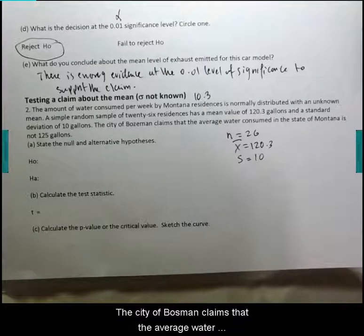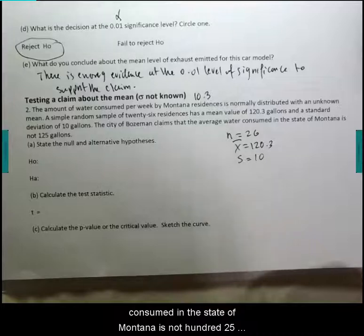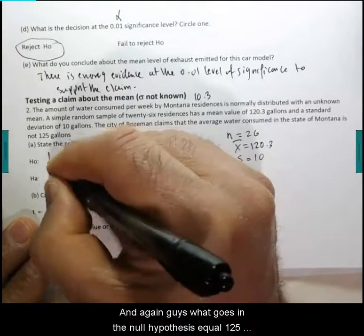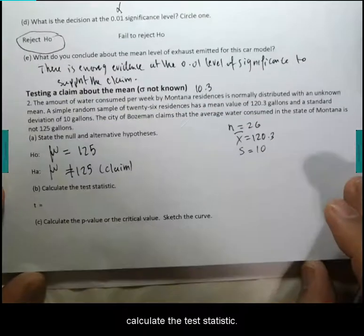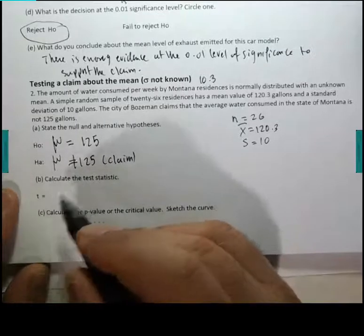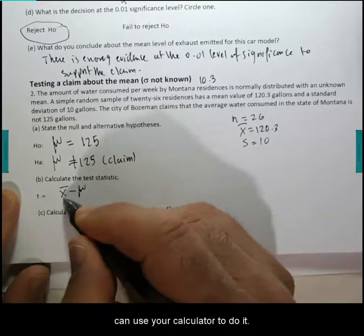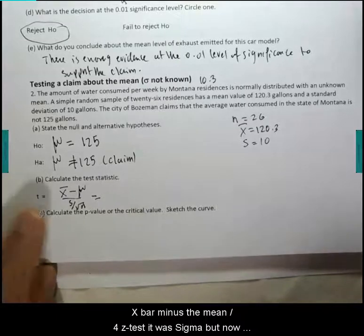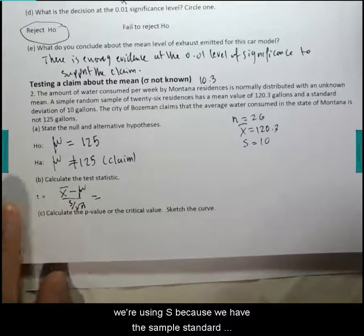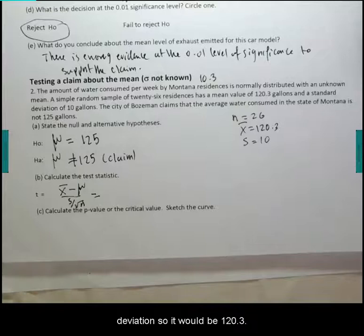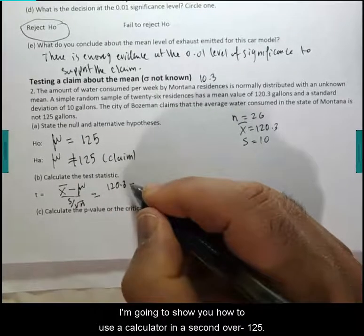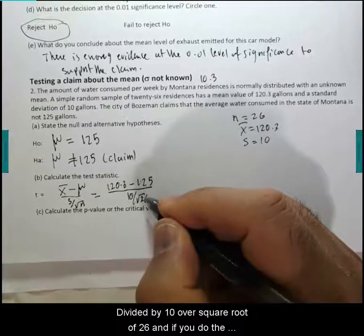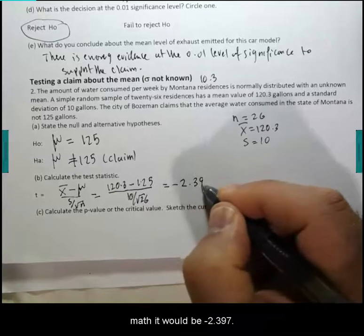The city of Bozeman claims that the average water consumed in the state of Montana is not 125. That's the claim. What goes in the null hypothesis? Equal 125. Calculate the test statistic. The formula for the test statistic is x-bar minus the mean divided by—for z-test it was sigma, but now we're using s because we have the sample standard deviation. So it will be 120.3 minus 125 divided by 10 over square root of 26. If you do the math, it will be negative 2.397.